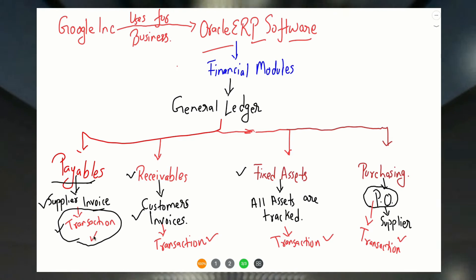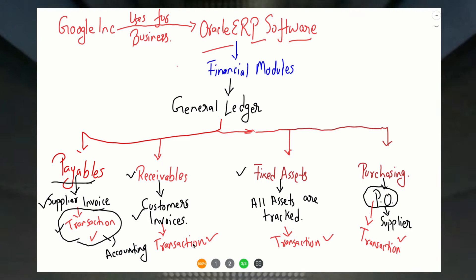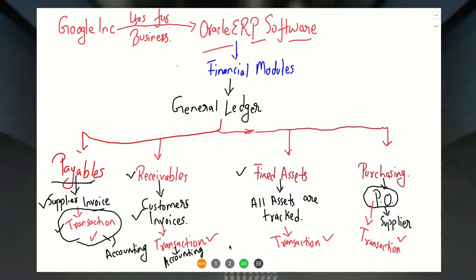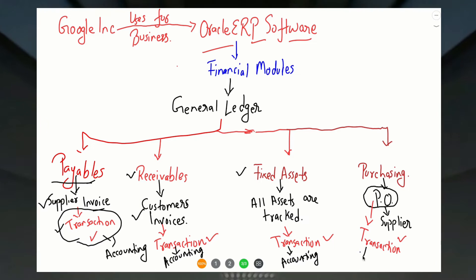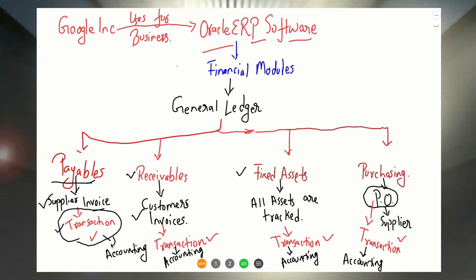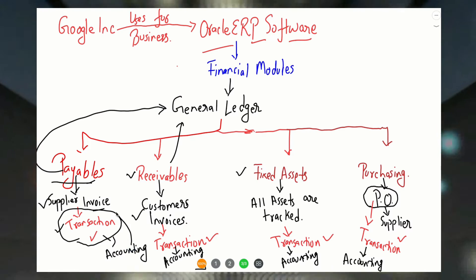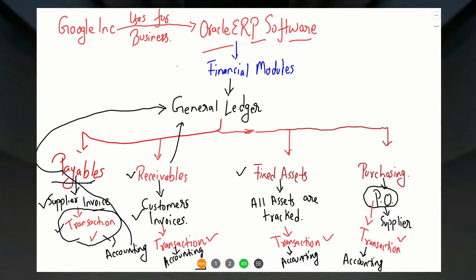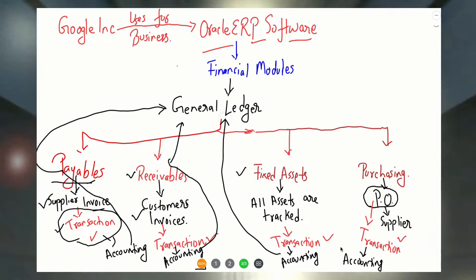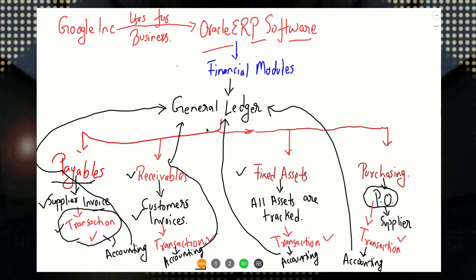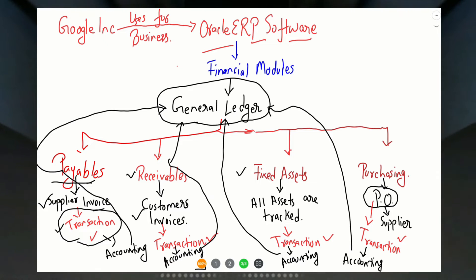For example, when we are recording supplier invoices in payables, there will be a journal entry accounting. Same way, in receivables, when we are issuing an invoice to the customer, there will be an accounting entry for that as well. So the transaction's accounting entry is created in these modules, and those accounting entries are transferred to the journal ledger.